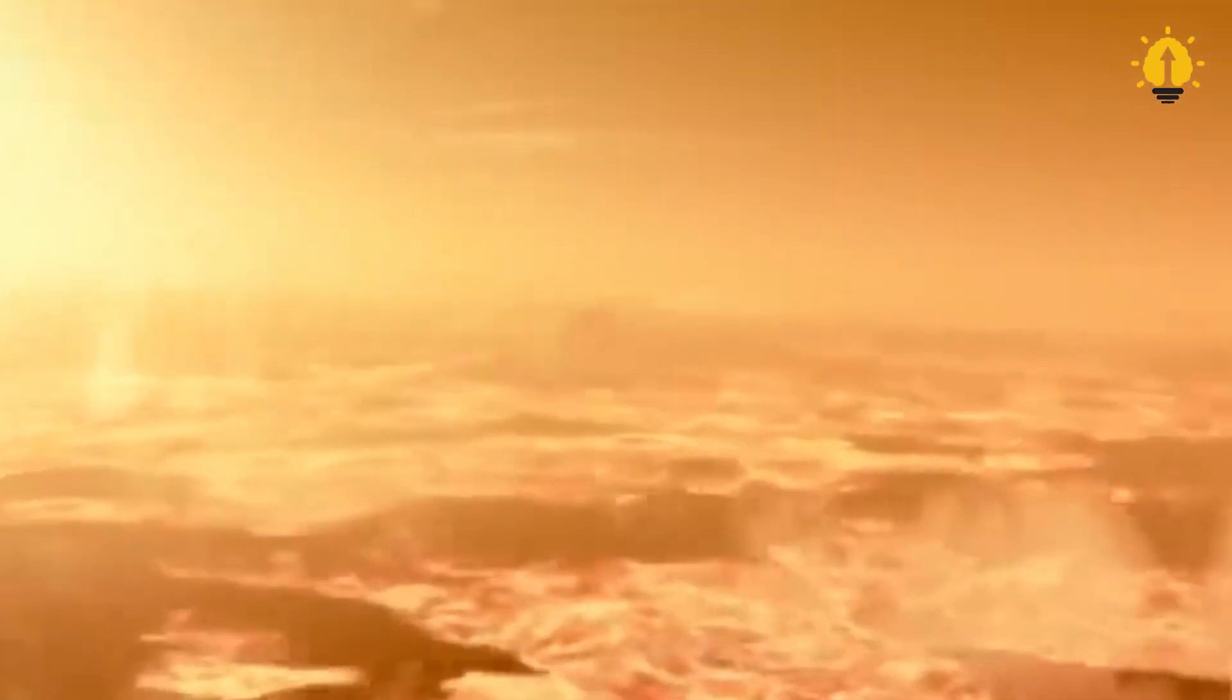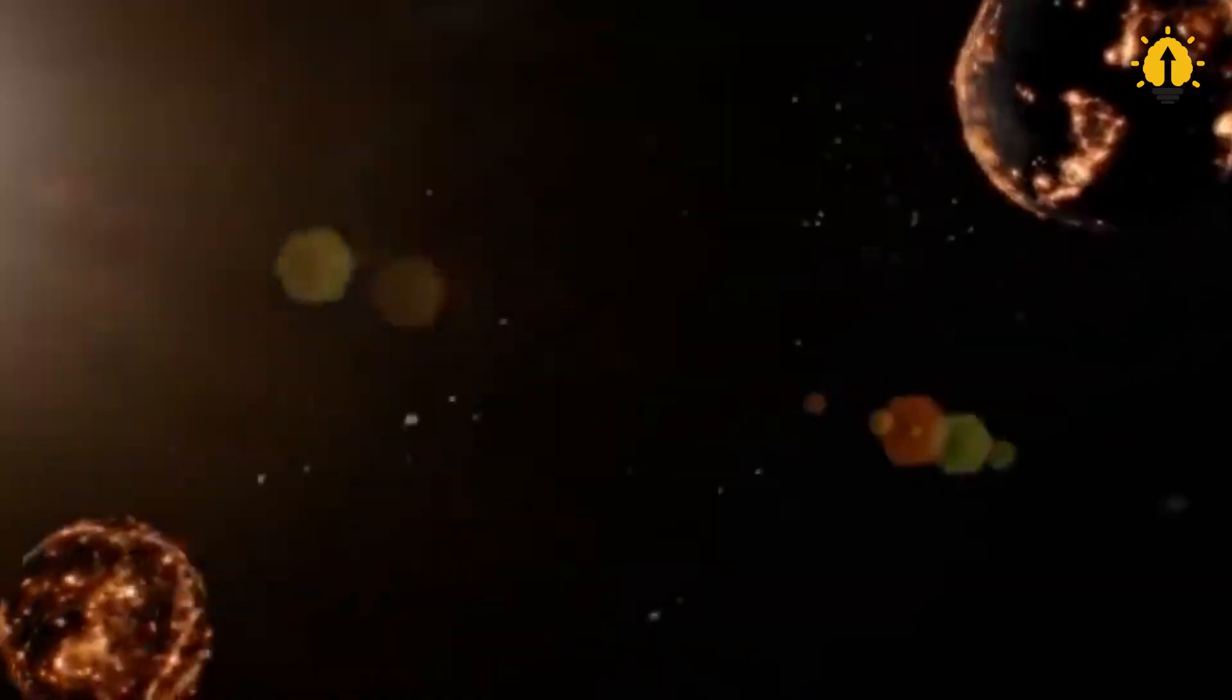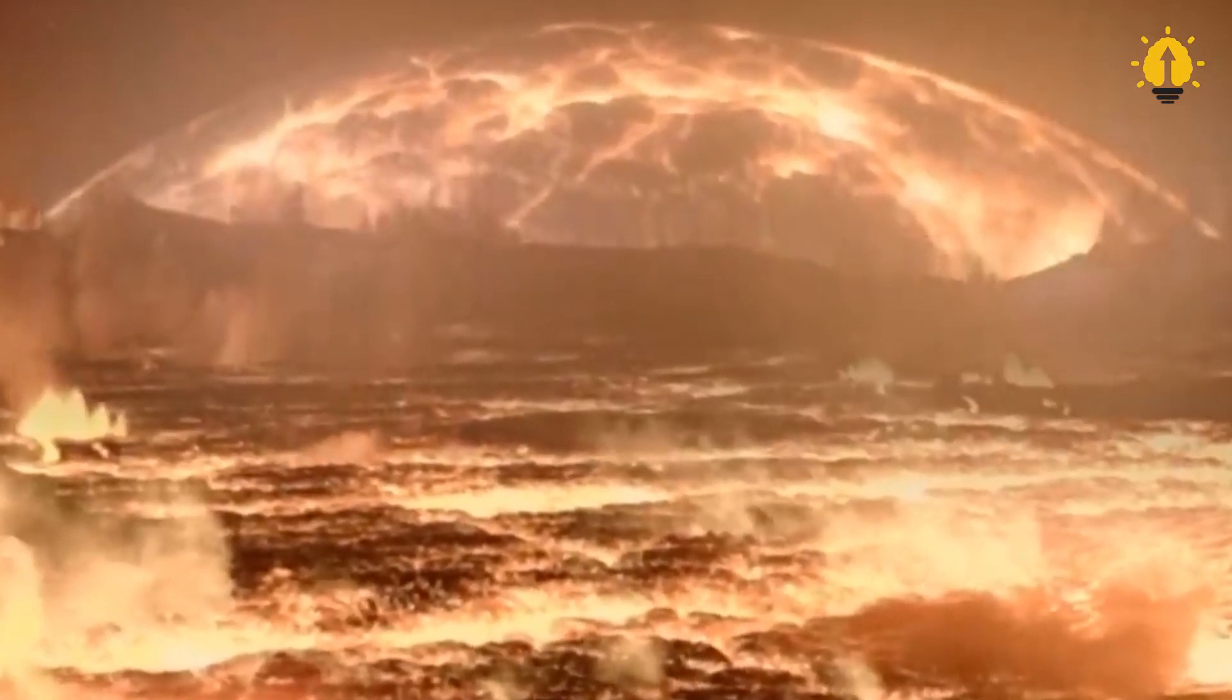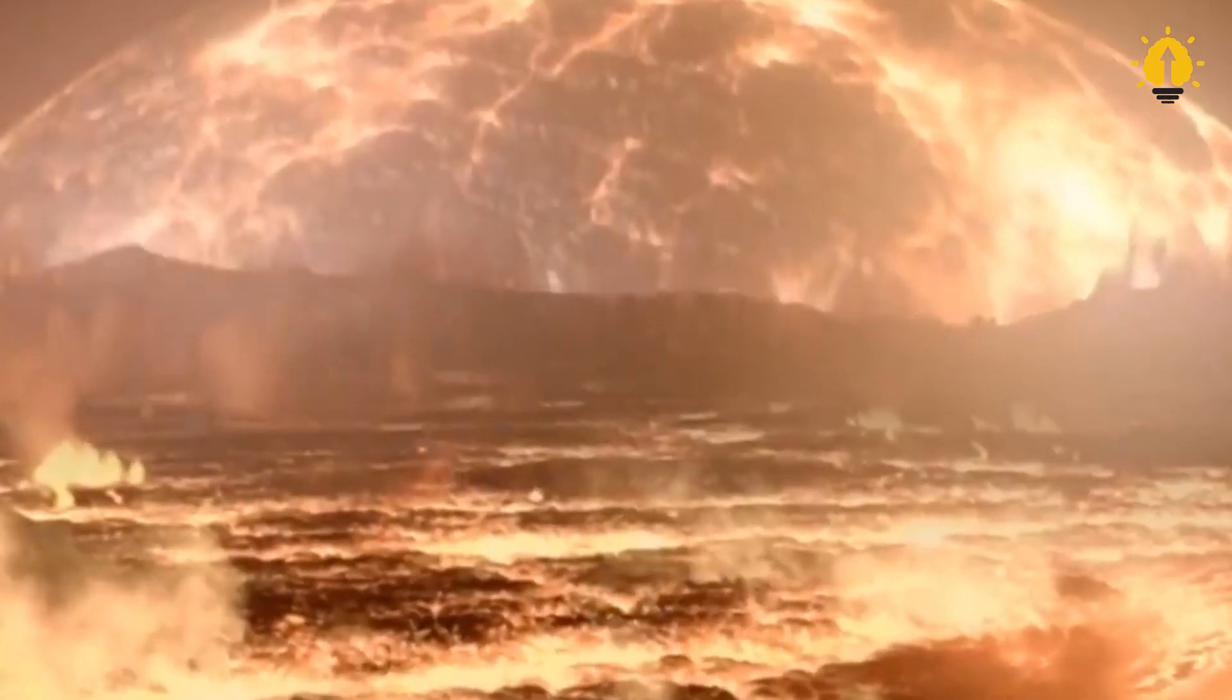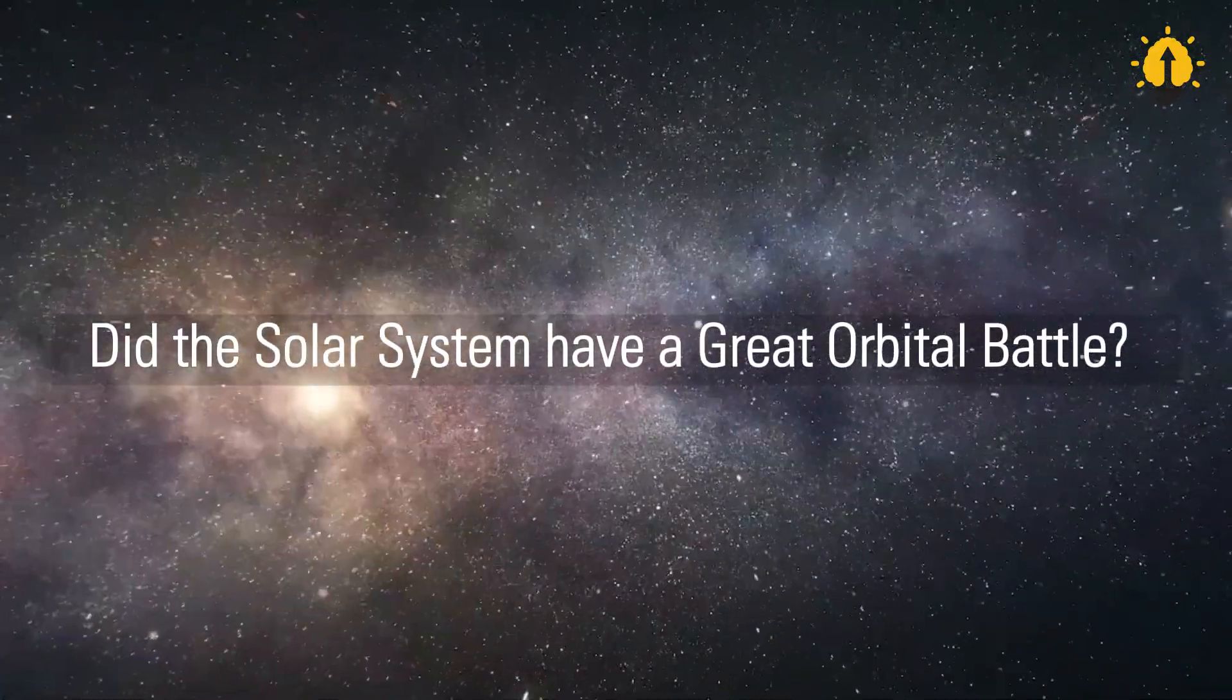It's known that only nuclear explosions at an advanced level could break giant planets and change the position of planets. From the many changes in the states of planets in our solar system, one can see the participation and influence of intelligent life. Did the solar system have a great orbital battle?